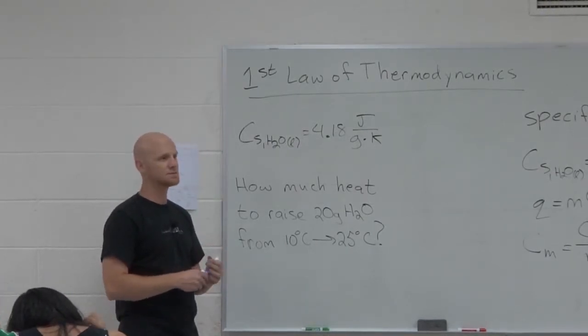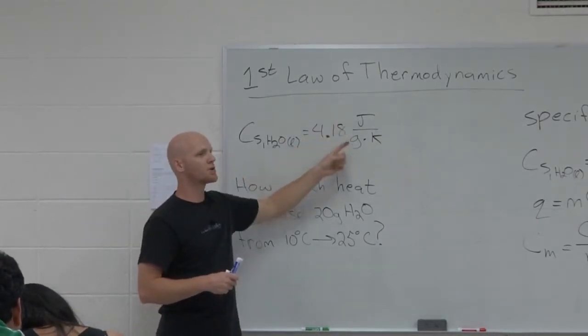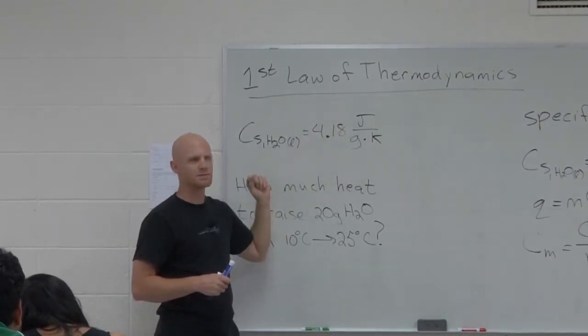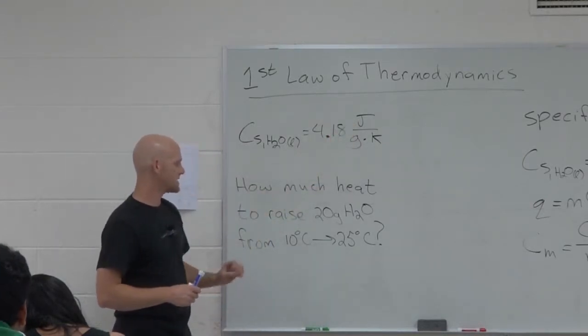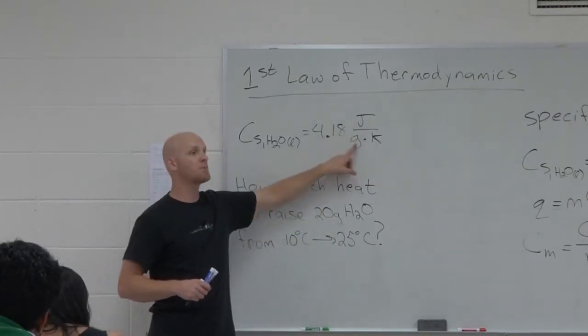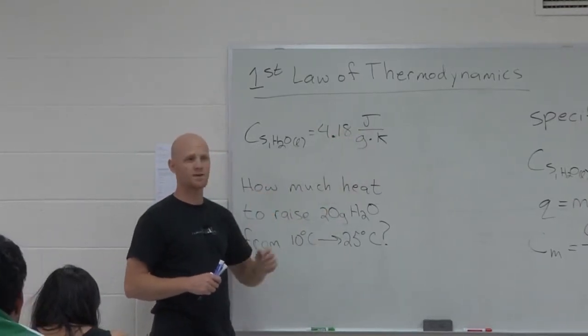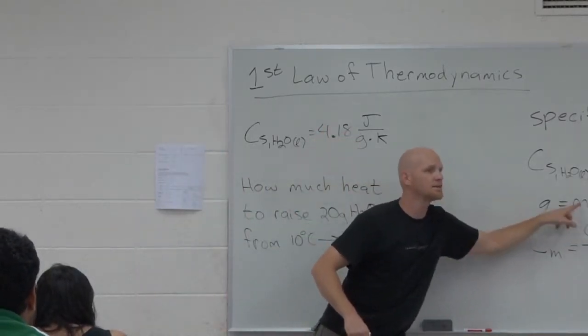So what do I do? Well, it's this many joules per gram. Well, how many grams do I have? So then what would be the heat capacity for 20 grams? If this is the heat capacity per gram, what would the heat capacity be for 20 grams? Yeah, multiply by 20. Kind of that's why we multiply by 20.